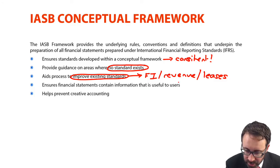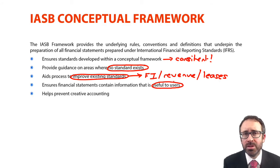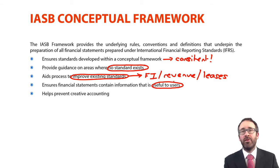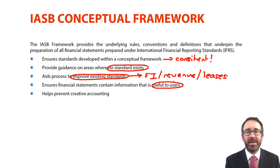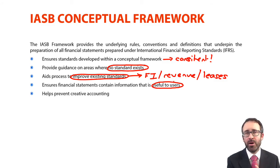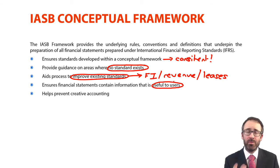The framework also makes sure that the information is useful, with particular focus on measurements and recognition. We need to ensure that when we recognise something, it is useful and has been reliably measured — if not, we shouldn't be including it, since the users of the accounts are looking to make decisions. It also rules out any creative accounting, because if there is any area of uncertainty, you should go back to the framework when using judgment or estimates to ensure that the accounting you're applying is not unethical or creatively manipulated.